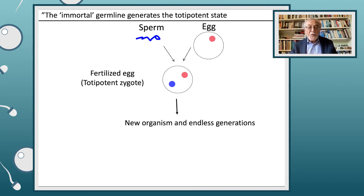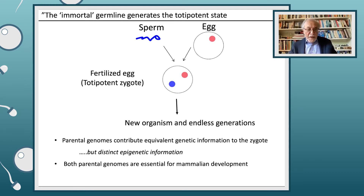But before they get to this point, a lot of things have to happen. They have to start somewhere and go through many changes. The parental genomes contribute equivalent genetic information in mammals, but they contribute distinct epigenetic information — this is quite an important point to keep in mind. And in mammals, both parental genomes are essential for development.